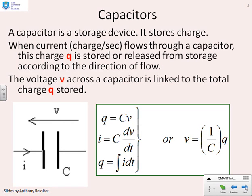A capacitor is a storage device, and in particular it stores charge. So when current flows, current is the rate of flow of charge per second or coulombs per second, and the capacitor stores this flow. It could either be an increasing store or a decreasing store, depending on the direction of flow.